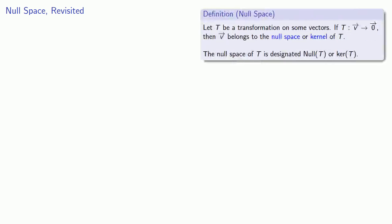We can also talk about the null space. The null space of a linear transformation is a set of vectors where the transformation sends those vectors to the zero vector.